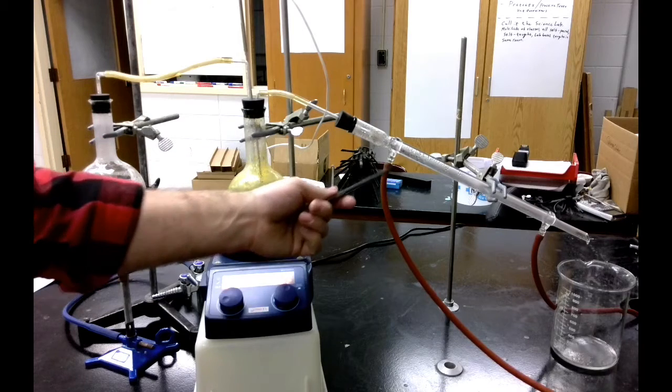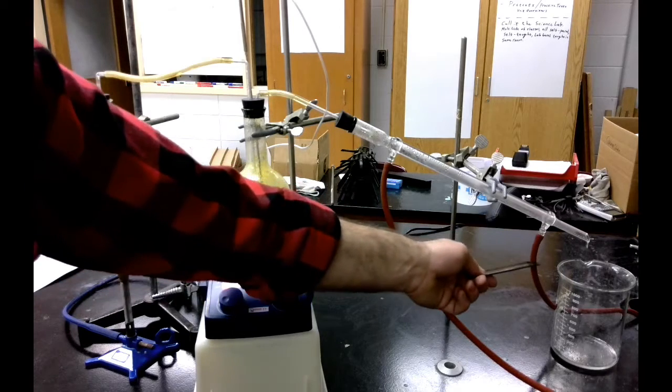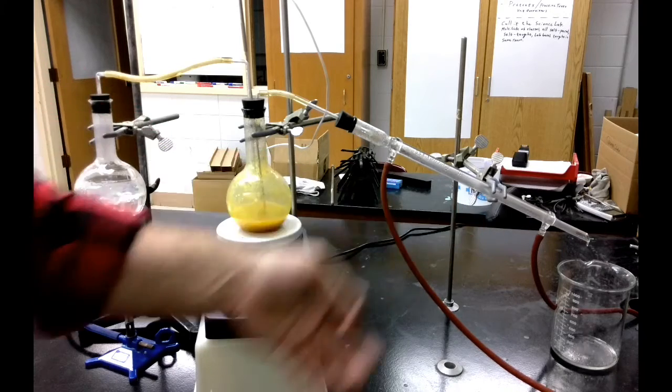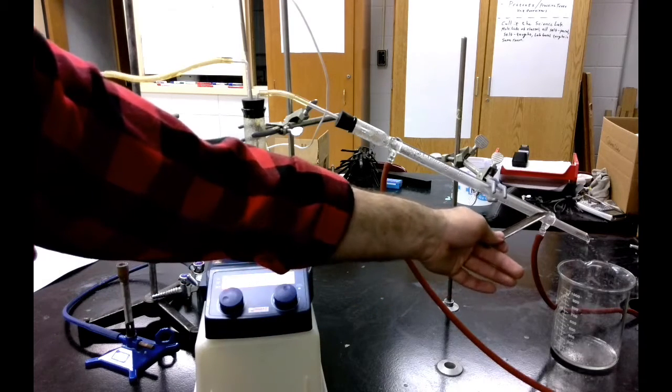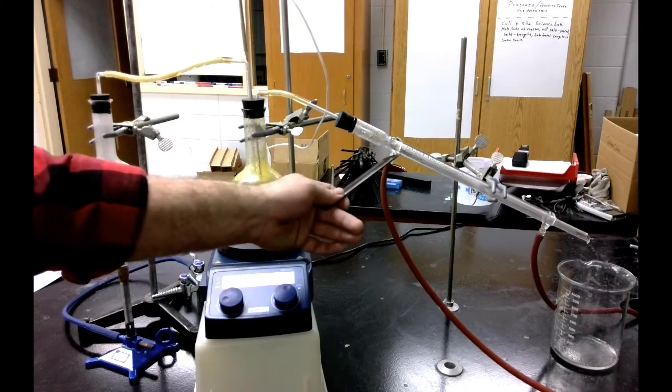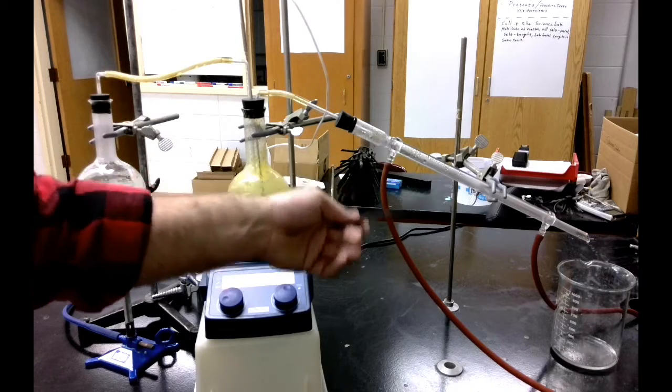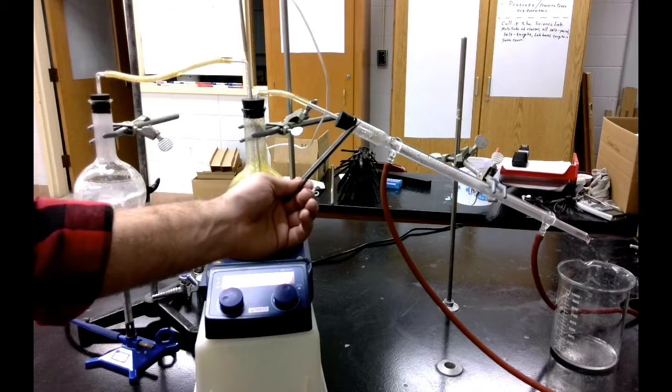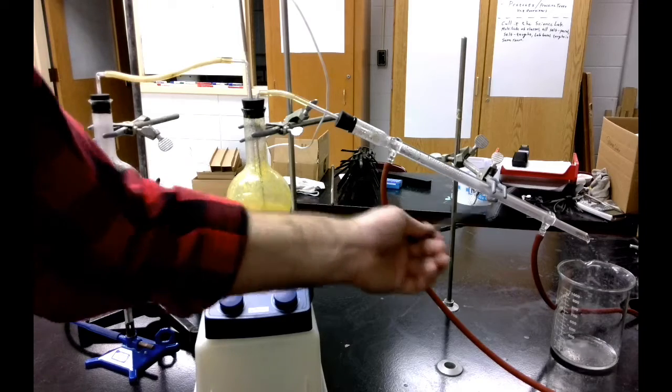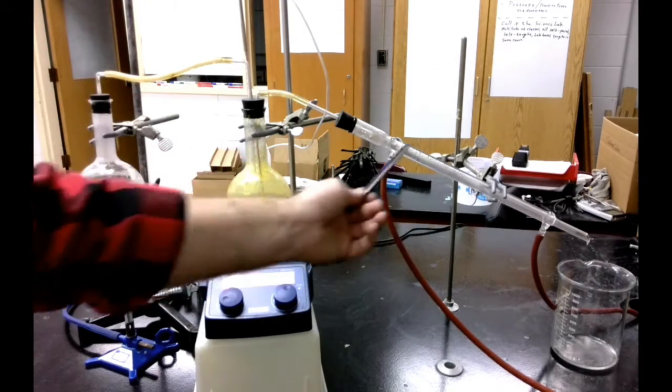This is called a condenser. What this does is it has fresh water coming in from the tap, it goes through a double-walled glass tube, so water is able to flow from here up through here, and then on the inside it's hollow, the water can't get all the way in, and I've got the gas traveling through this tube, and it's being cooled down by this water that continuously flows through here.